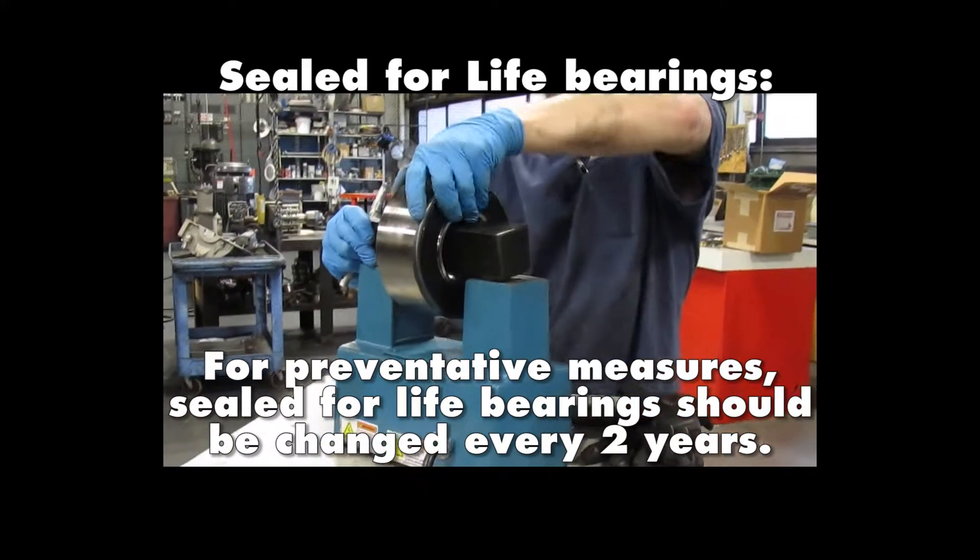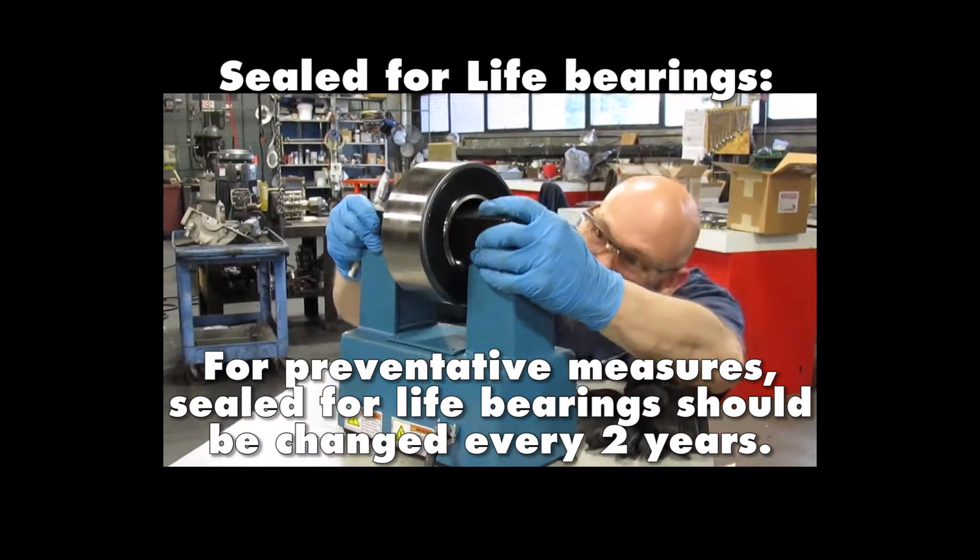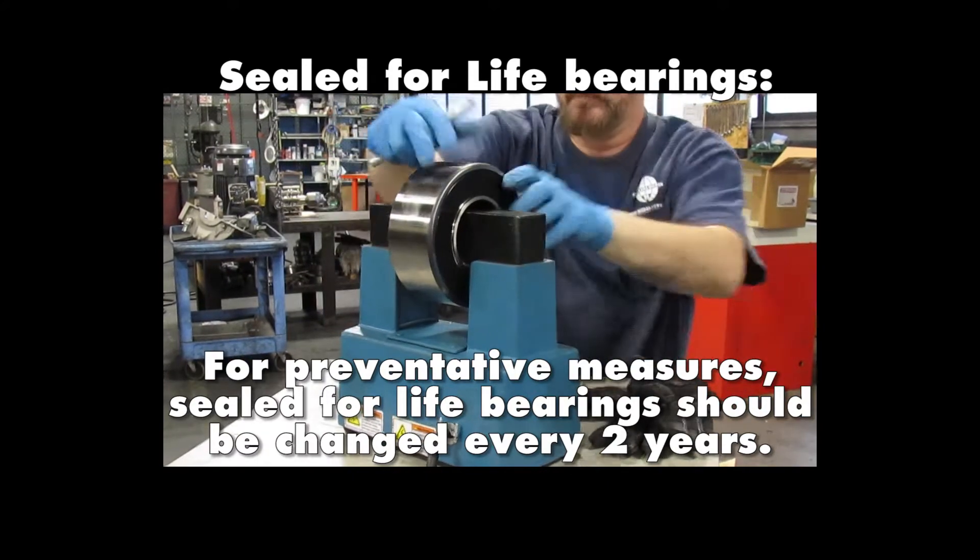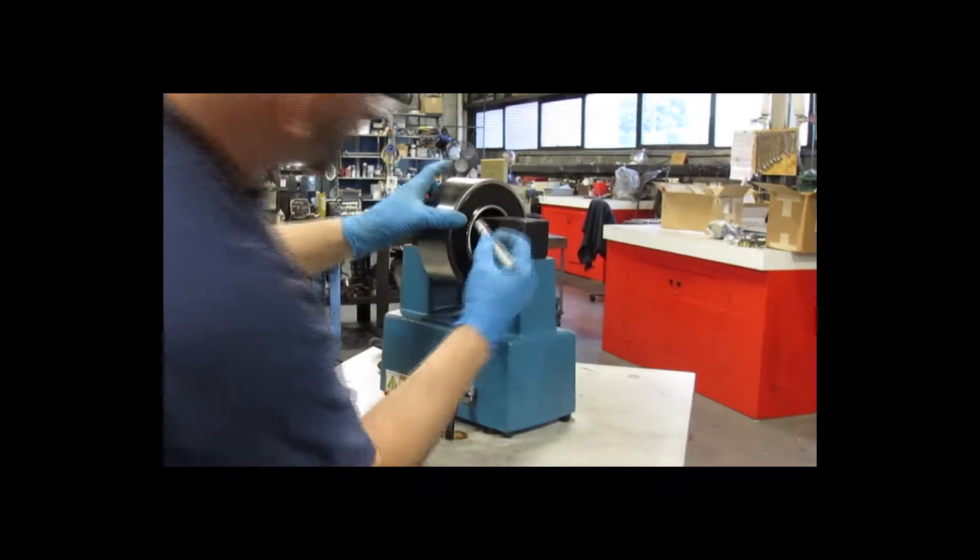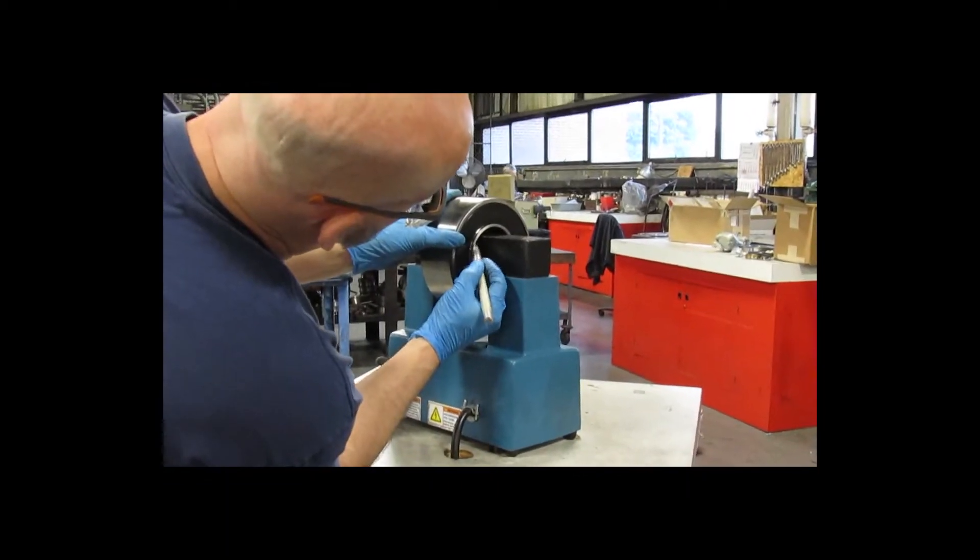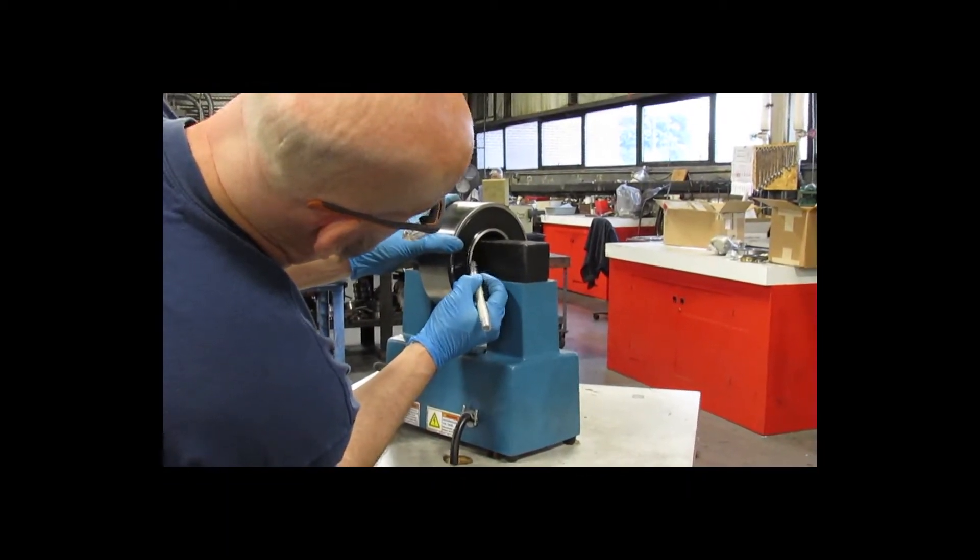This particular bearing is a sealed for life bearing. We don't want to heat this bearing up beyond 180 degrees Fahrenheit. I apply a small film on the inner race of the bearing with the bearing crayon, which will melt when the bearing reaches the proper temperature.